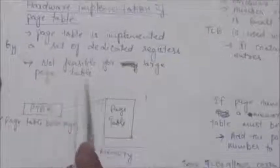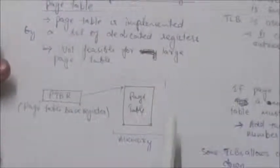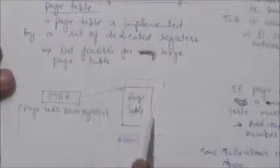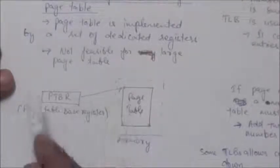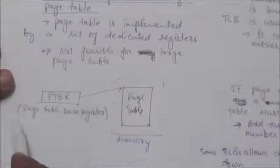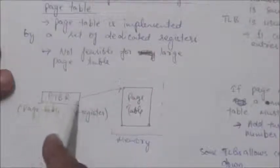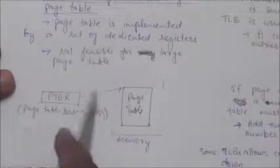Instead, the page table is stored in main memory, and a register called the Page Table Base Register points to the page table in memory. Now we will study TLB, that is Translation Look-aside Buffer, an associative high-speed memory.